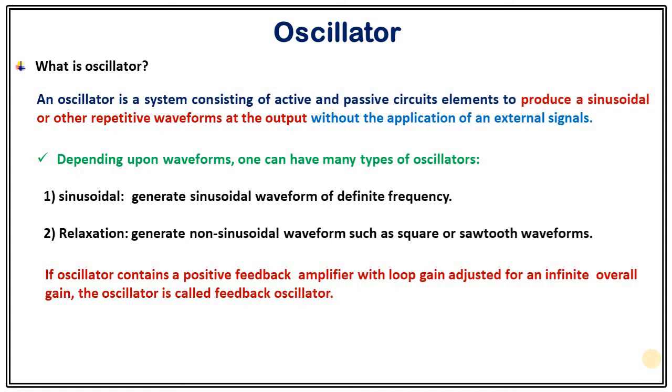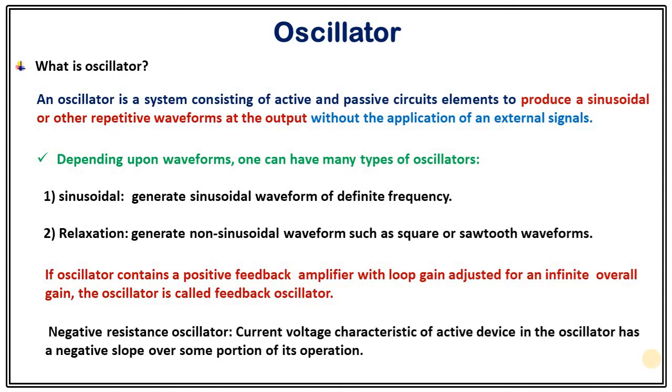In that scenario the oscillator is said to be feedback oscillator and if current voltage characteristic of active device present in the oscillator has a negative slope over some portion of its operation then such oscillator is called negative resistance oscillator. Tunnel diode oscillator comes under this category negative resistance oscillator category.